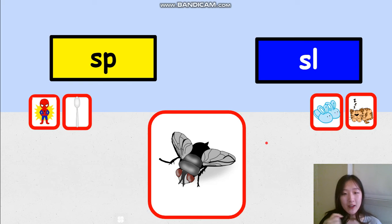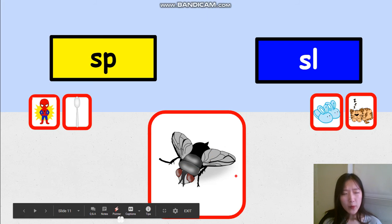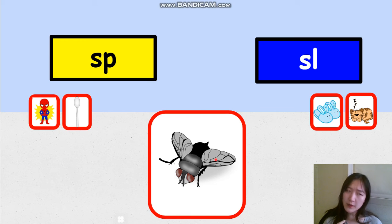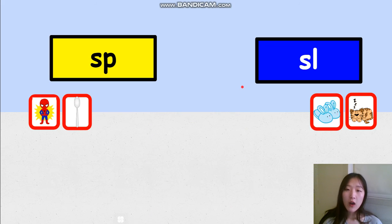One more word. What is this? Where should this word go? It's a fly. But wait a minute — fly doesn't have the sound SP. It's not spy. It's not sly. It's fly. The beginning letter must be the letter F. We should put this card all the way away because it doesn't belong to either group.